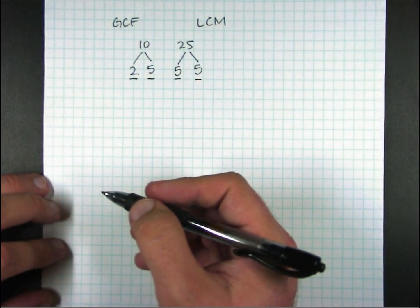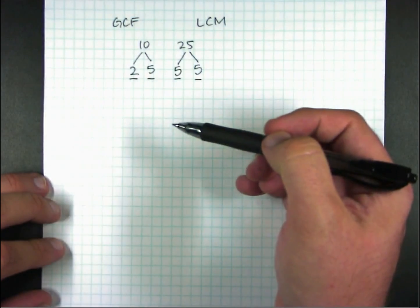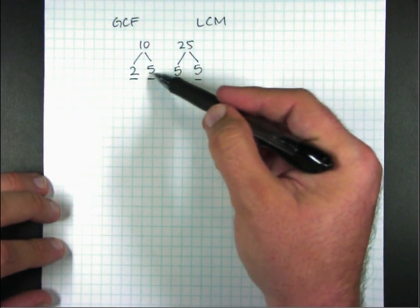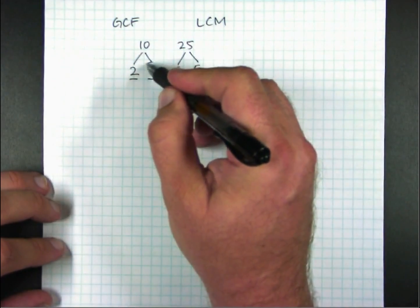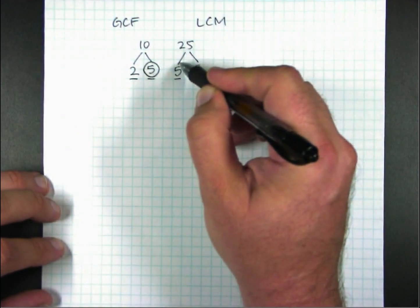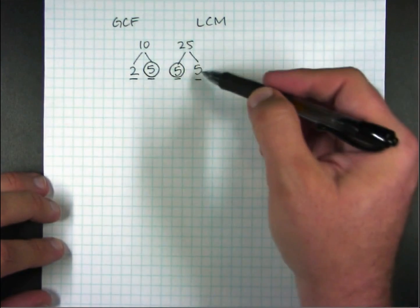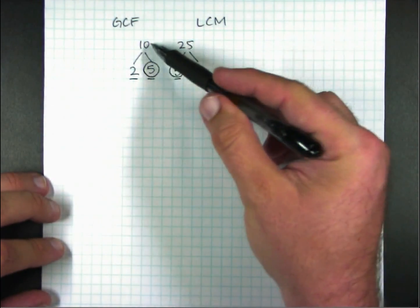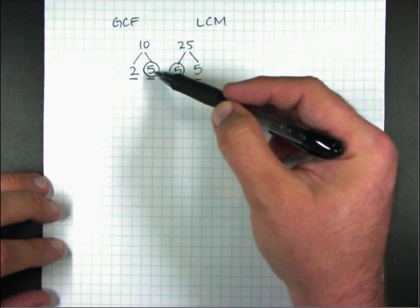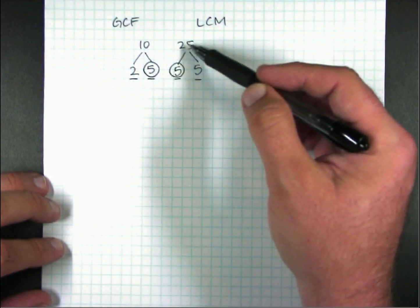The trick to finding greatest common factor is what factors are shared between the two. If I look, I see that there's a 5 in common between the two. So I'm going to put a circle around it. Now there's another 5 here, and sure, it's shared. But keep in mind that 10 only has one 5 as a factor, so you can only circle one 5 from the 25.